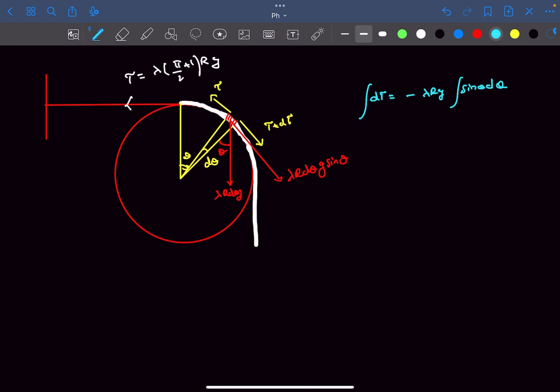Now we have to talk about the limits. At theta equals 0, which means we're talking about the topmost point, the tension on the rope is T, which is lambda R g times (1 + π/2). At the angular position of 90 degrees, which means this particular point, the tension will be the weight of this part of the rope plus the mass M₀ attached at point B.